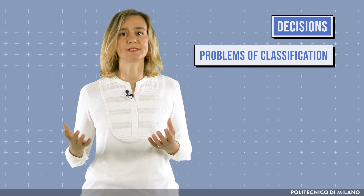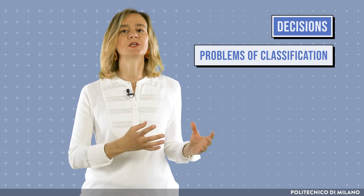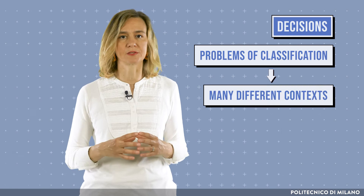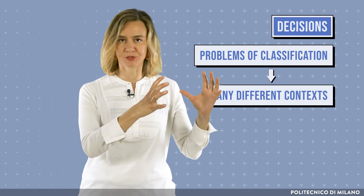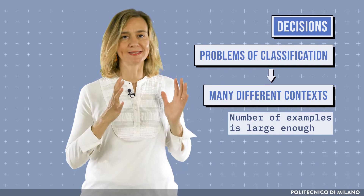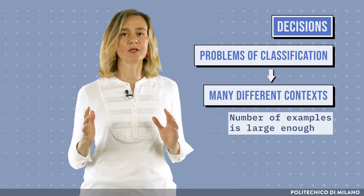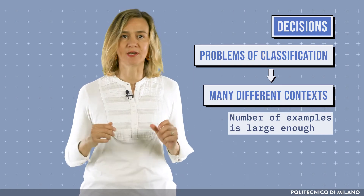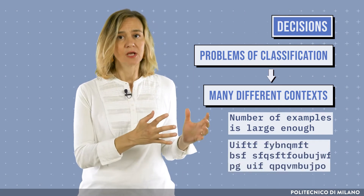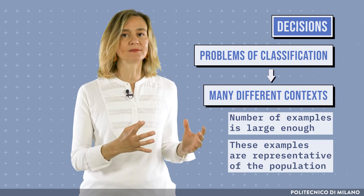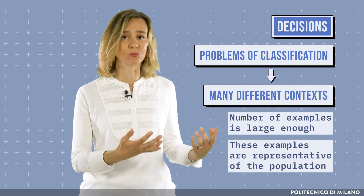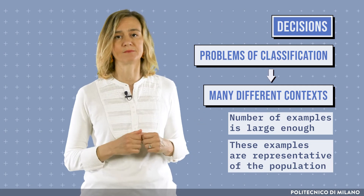Decisions can be seen as problems of classification. A classification algorithm can be applied to many different contexts. What is important is, first, that the number of examples used to train the algorithm is large enough, and second, that these examples are representative of the population on which the algorithm will decide.